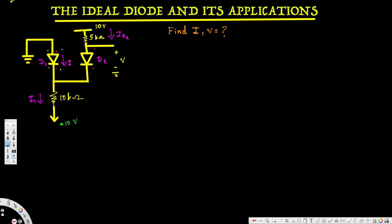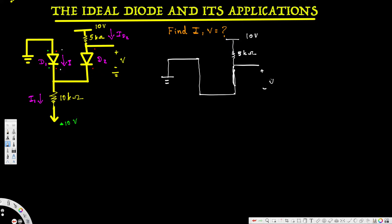Now let's look at this circuit. Let's redraw it by making everything a short circuit — replacing each diode with a straight wire. Here we have a resistance, and this is 10V, 5k ohm. Here we have plus and minus voltage.